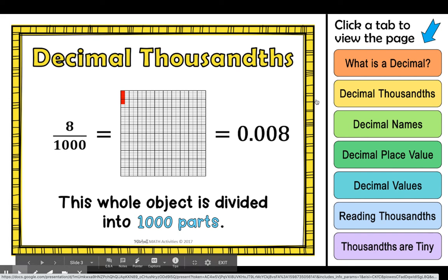Here's a visual model that shows you how tiny a thousandth really is. Here's our one whole. That's the square itself. And then you can kind of see the line showing you where the tenths are. So the tenths are these ten strips that go up and down. There's ten of those.